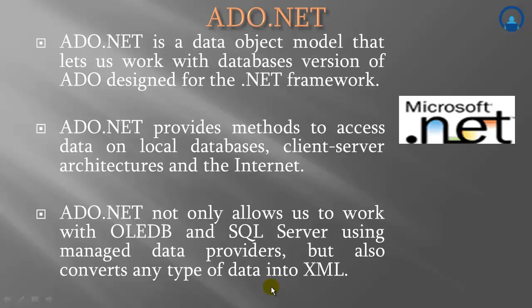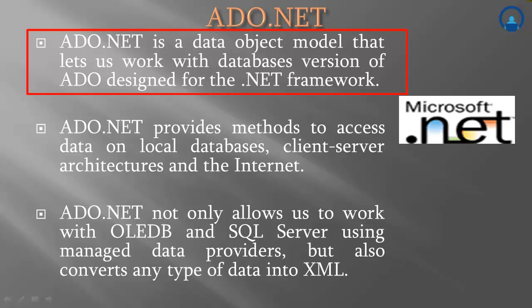Coming to ADO.NET. Traditionally, an application maintained a database connection as long as it executed. This is not feasible as open connections consume valuable resources. Also, performance is reduced because of the overheads in maintaining the connection. ADO.NET is a data object model that lets us work with databases — a version of ADO designed for the .NET framework. Data access in ADO.NET is based on disconnected architecture, which means the connection need not be maintained continuously while the application is executing.